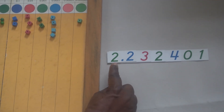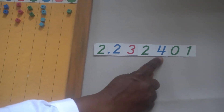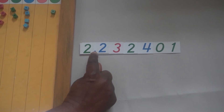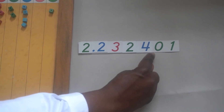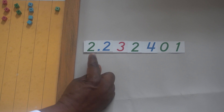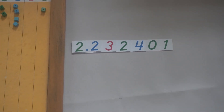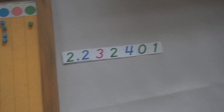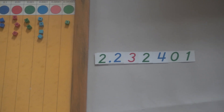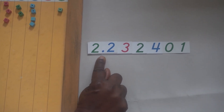You need two units, so I read it: two — and — two hundred and thirty-two thousand four hundred one millionths. Two and two hundred thirty-two thousand four hundred one millionths. Notice that the decimal point is read as 'and.' This is the only time we say 'and' in numbers — when we are reading it as the decimal point.